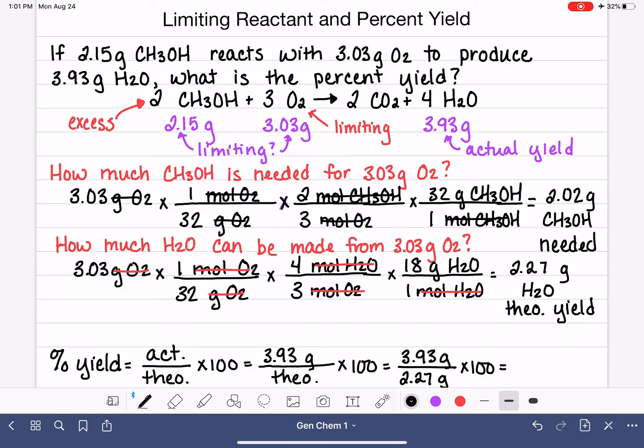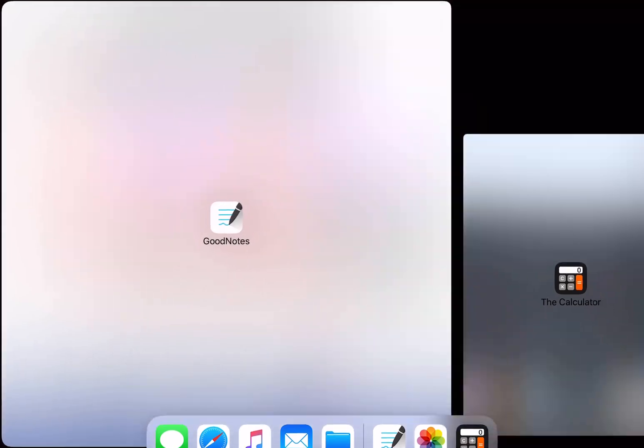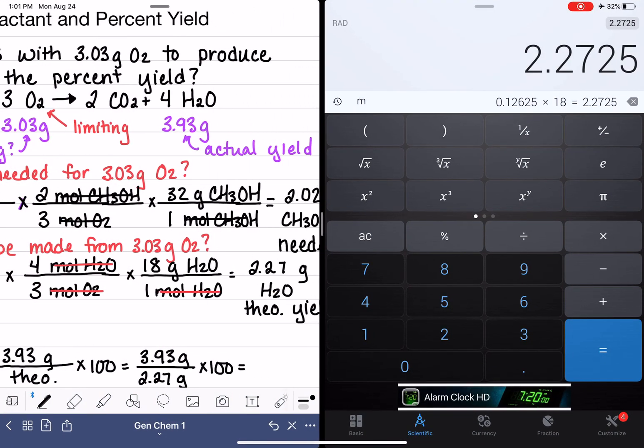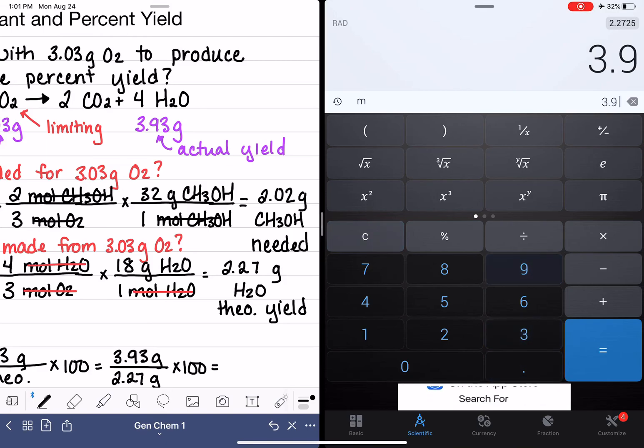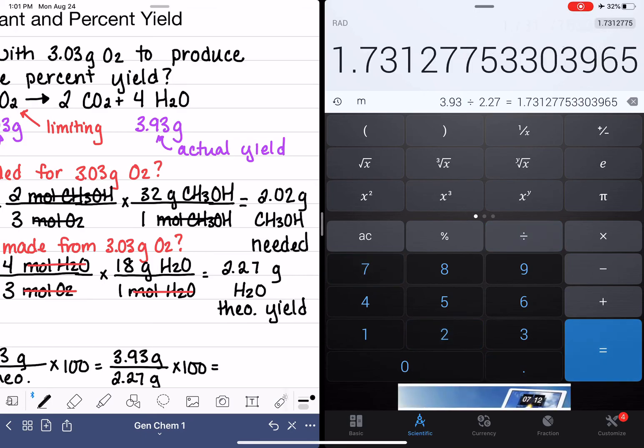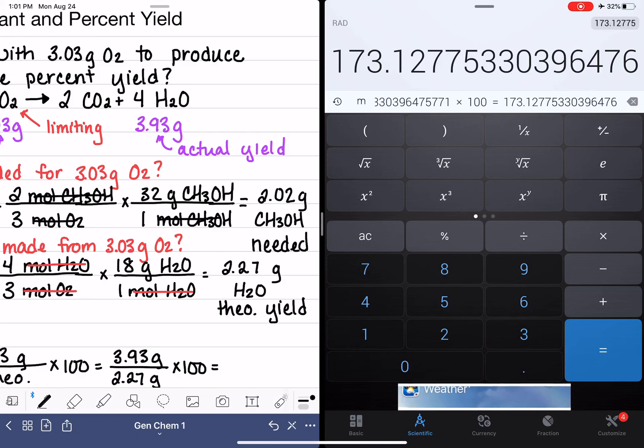Now, if you're looking at this, you might be thinking, oh my gosh, the actual yield was higher than the theoretical yield. The theoretical yield is supposed to be the maximum that could be made. And you're right. This doesn't happen very often, but it does happen occasionally. And this is why I chose this particular example.